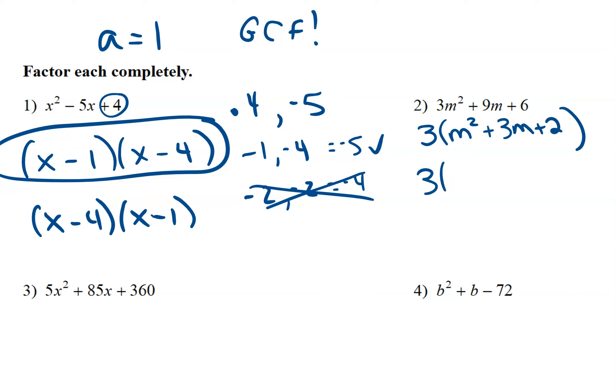Now we have just an m squared, so we know it's going to be m and m. And we want numbers that multiply to give us 2 and add to give us 3. Well, what multiplies to give you 2? 1 times 2. Oh, look, those add to give you 3. Perfect. So m plus 1 and m plus 2.